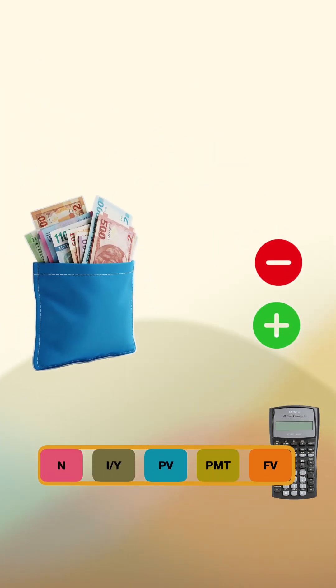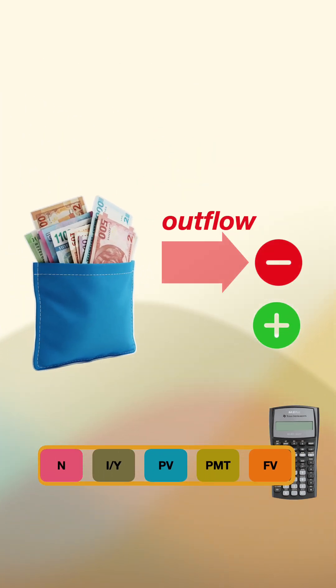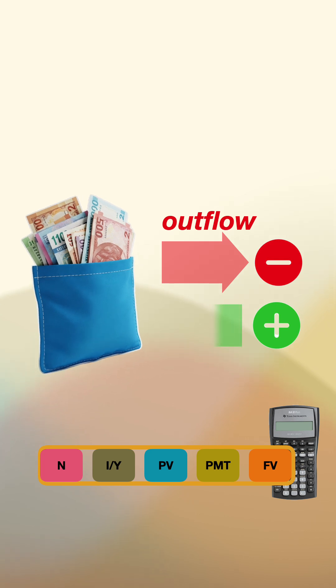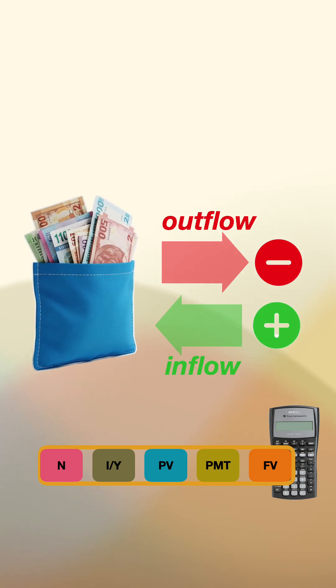Money leaving your pocket is an outflow. On the calculator, that's a negative number. Money entering your pocket is an inflow. That's a positive number.